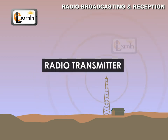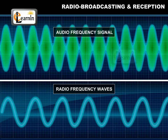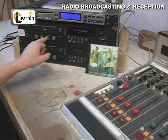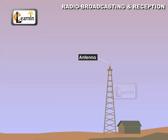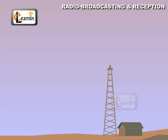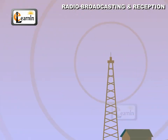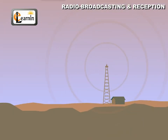Radio Transmitter. The AF signal and RF waves are combined in the modulator or transmitter. The modulated waves are fed to an antenna fixed on a tower. The transmitting antenna broadcasts the modulated RF waves into space.